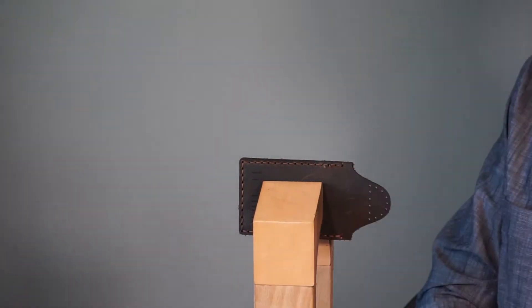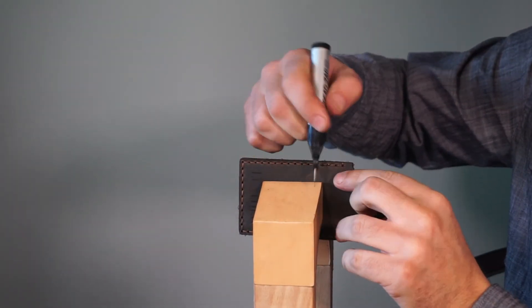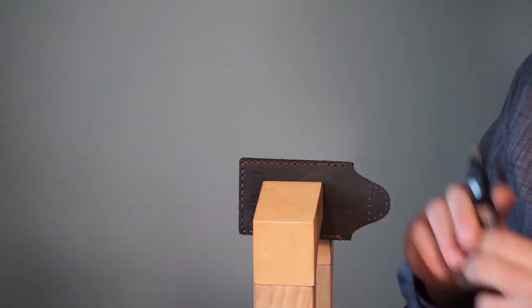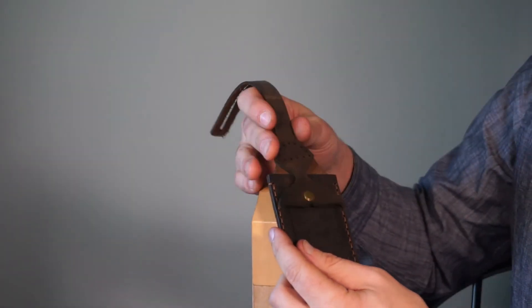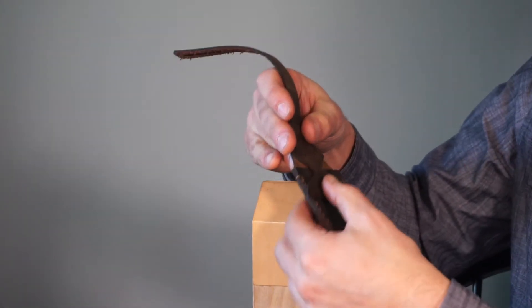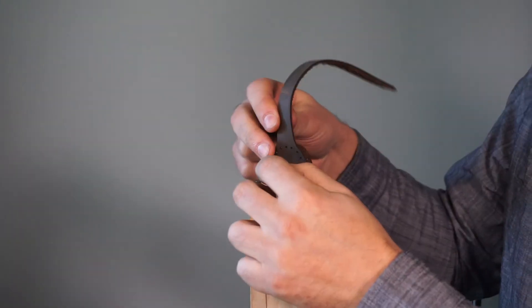Trim your thread ends to about an eighth of an inch and melt and press your thread ends. Now we are ready to add the strap.